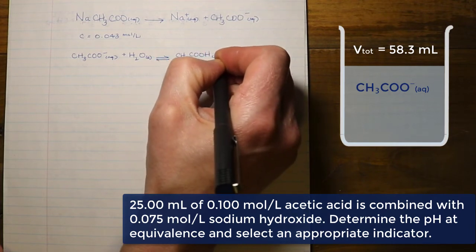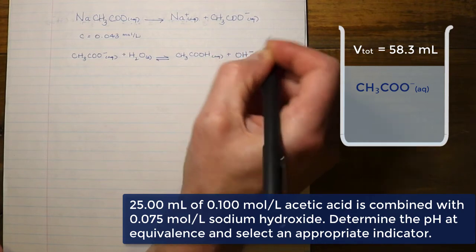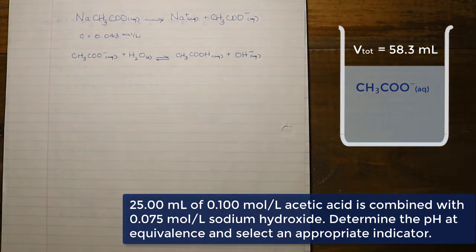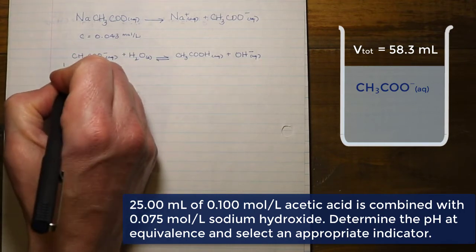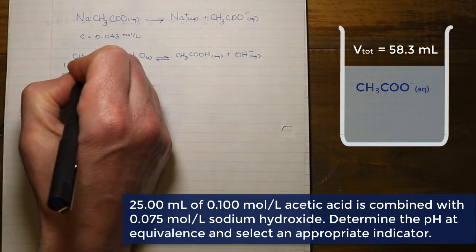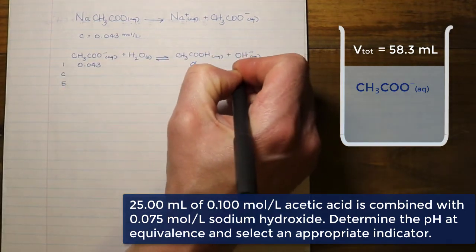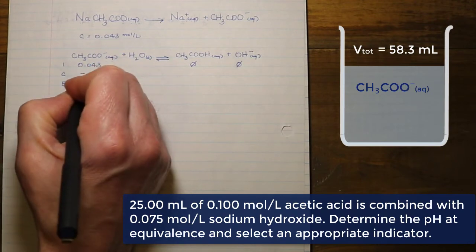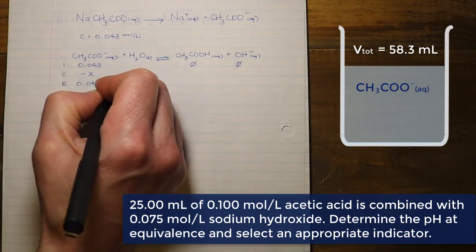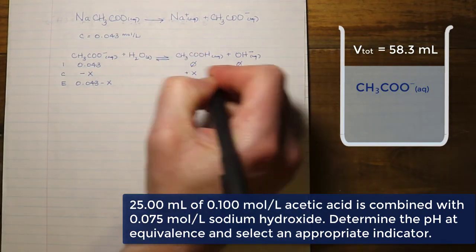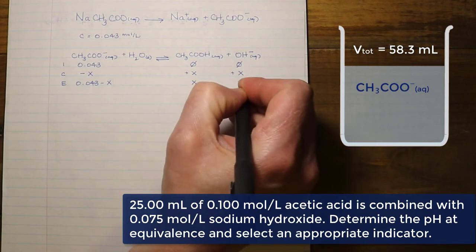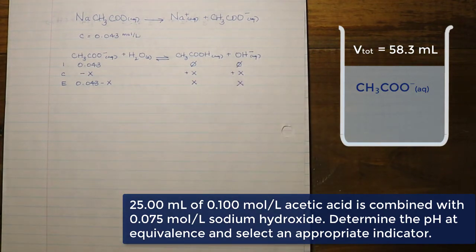Here is our equilibrium expression: the acetate ion impacts pH because, as the conjugate of an acid, it acts as a base, and we can verify this from the equilibrium equation — it produces hydroxide ions. We can then put together an ICE table. The initial concentration of the acetate ion is 0.043 mol/L; the initial concentrations of the product ions are treated as 0. The acetate concentration decreases by X while the product ion concentrations increase by X.